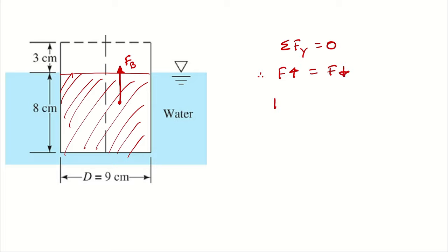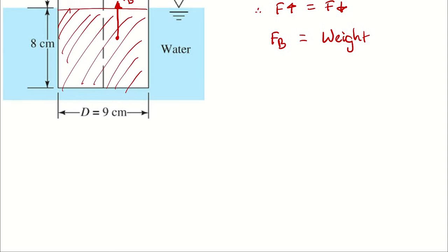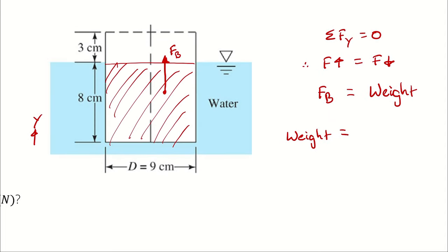The force up would be the buoyant force. The force down would be the weight of the can, which is the thing that we're actually solving for. Then weight is equal to buoyant force, which is equal to the weight of the water displaced.